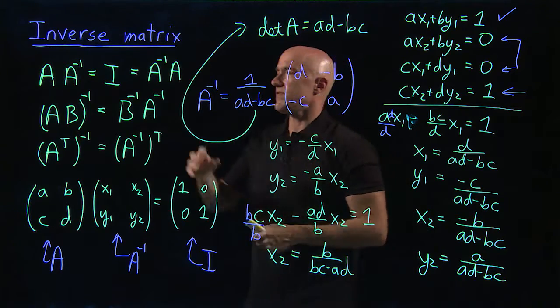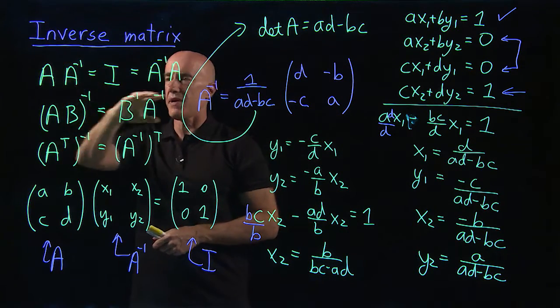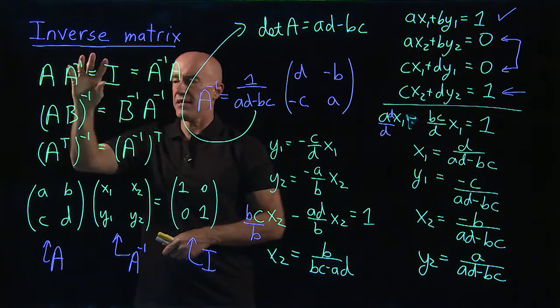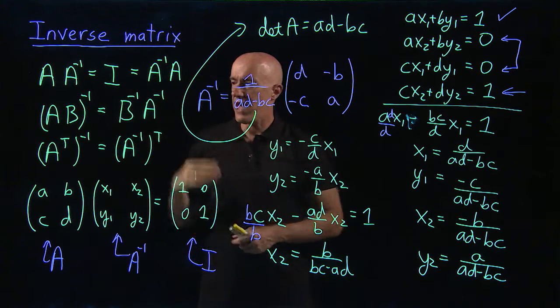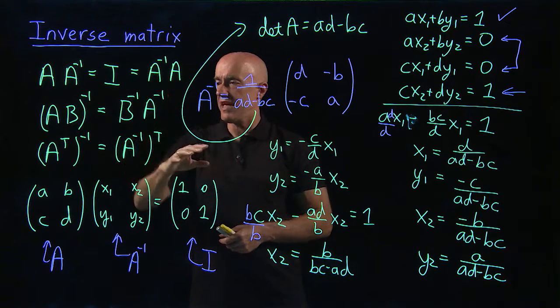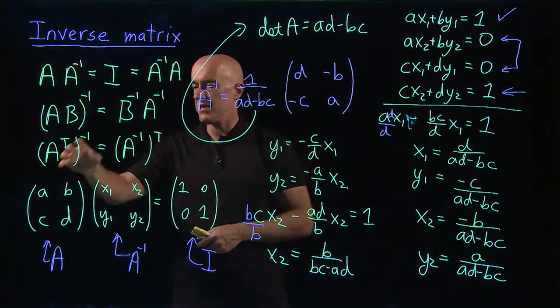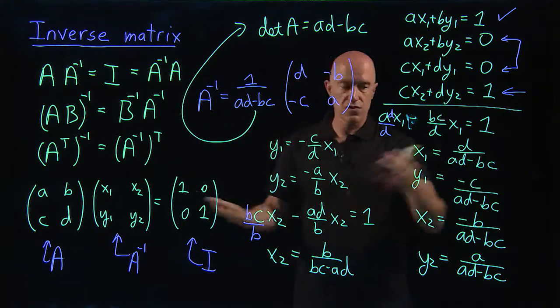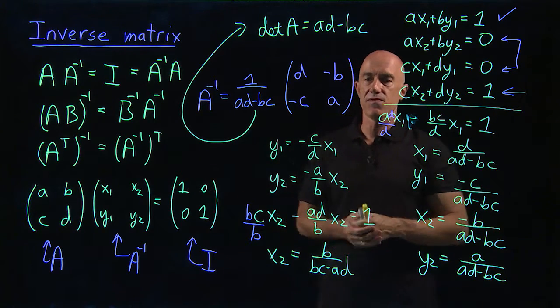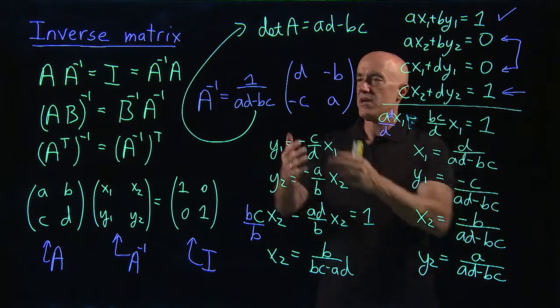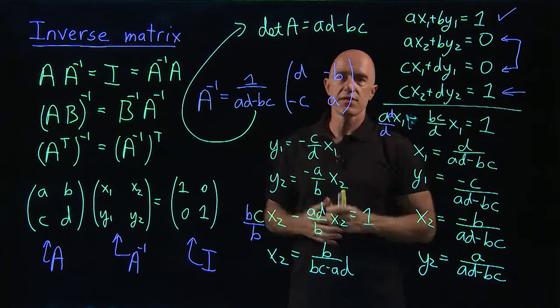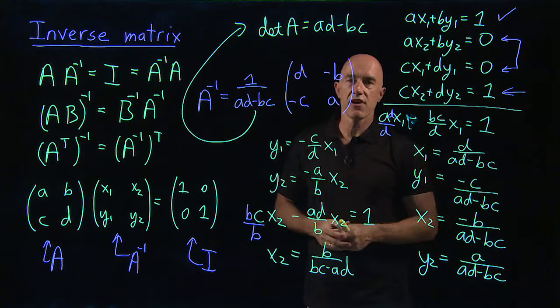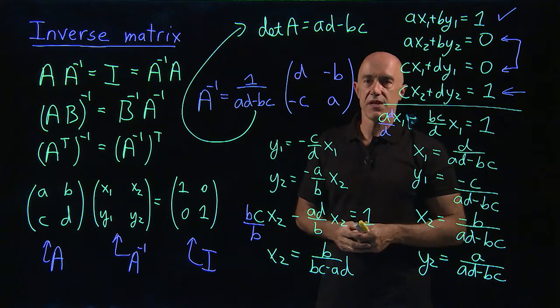So what have we done? We've introduced the idea of the inverse matrix, A inverse. A inverse A equals A inverse A is the identity matrix. We have some identities: AB inverse is B inverse A inverse. A transpose inverse equals A inverse transpose. And then we've derived, using solving a system of four equations and four unknowns, we derive the formula for the inverse of a two-by-two matrix. I'm Jeff Chasnoff. Thanks for watching, and I'll see you in the next video.